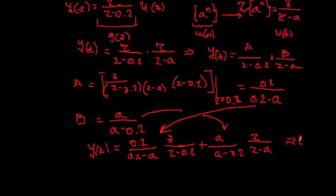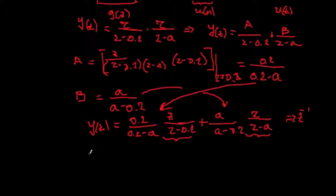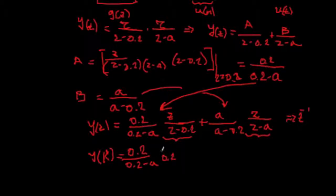Therefore, when we apply Z inverse transform, we already recognize the terms here. What are these terms? And we have a discrete representation as Y(k) equals 0.2 over 0.2 minus a times 0.2 to the k, plus a over a minus 0.2 times a to the k.